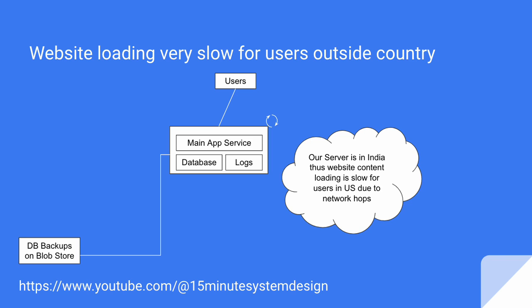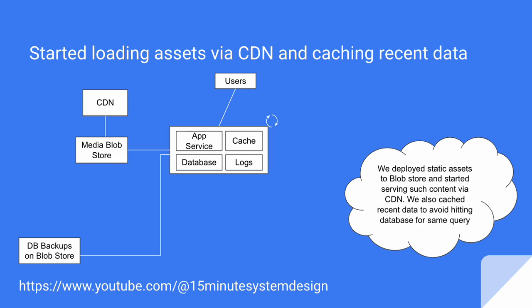Our machine was deployed in the India region. So far, we have served users without major issues. But now we want to go global and run marketing campaigns outside India. Some users from the US tried our website and complained it is loading very slow. We realized this is happening because users in the US are far from our server in India, and requests have to travel through several hops.